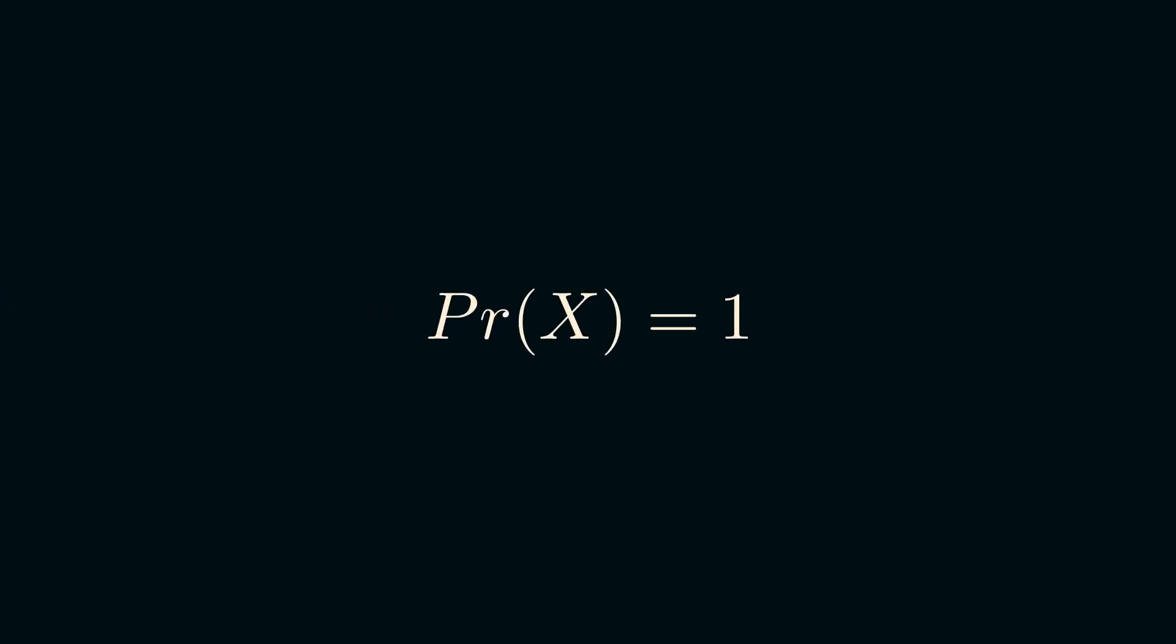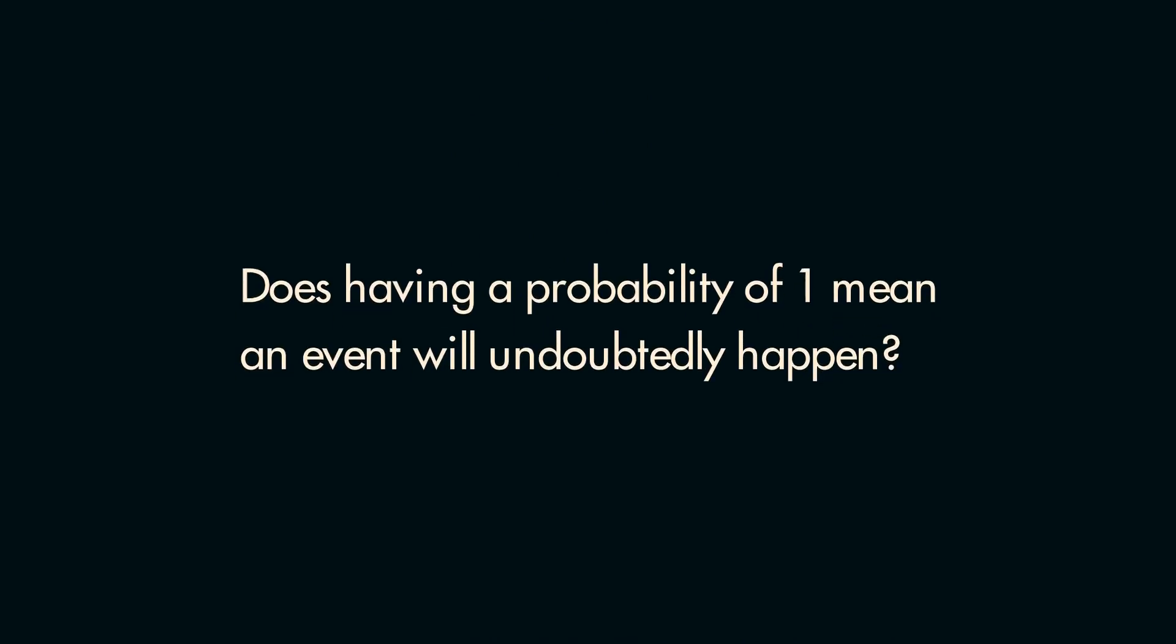Now I will admit, I have danced around the notion of the probability of an event being 1 a bit in both of these definitions, so I will ask the question: does having a probability of 1 mean an event will undoubtedly happen? Well not quite, usually when an event has a probability of 1, it is referred to as being almost surely to happen.